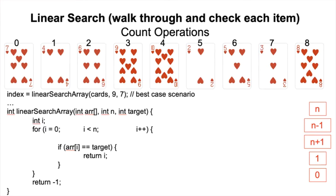Hi, everyone. In this video, I'm going to count each and every operation that a linear search algorithm performs to try and find an element in an array of numbers. The purpose of counting operations an algorithm performs is really the foundation for developing a growth rate function, which can be used to determine the Big O notation — the order of the algorithm — for efficiency reasons.